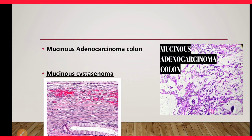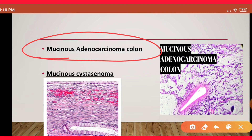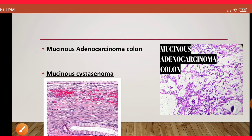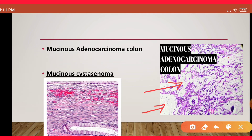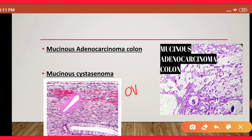In malignancy, whenever you have adenocarcinoma of the colon, it can produce an excessive amount of mucous material, and mucoid change must be reported in the histopathology report. On the histopathology section, you can see poorly formed glands showing dysplasia — that is the adenocarcinoma of the colon — and in between the glands there is an abundant light-stained mucous material. This mucoid change is present in mucinous adenocarcinoma of the colon.